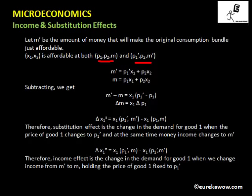If we let X1, X2 be the original consumption bundle, then X1, X2 is affordable both at P1, P2, M and at P1 dash, P2, M dash. So we get two equations: M dash equals P1 dash times X1 plus P2 times X2, and M equals P1 times X1 plus P2 times X2.